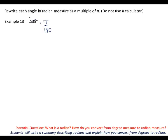Five goes into 135 how many times? You can use your calculator for that part. Twenty-seven. And into 180 how many times? Thirty-six. That's probably not all the way yet. Twenty-seven over 36 — what else goes in there? Three. Nine goes into 27 three times and into 36 four times. So, 3π over 4.